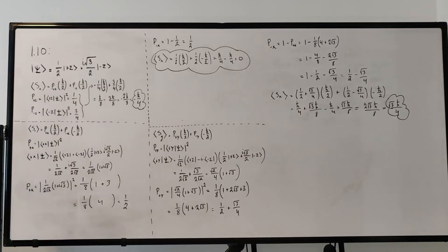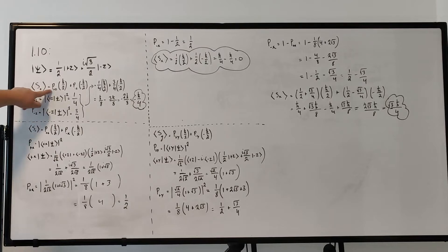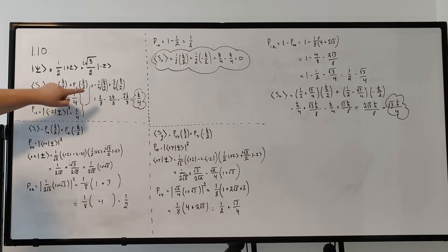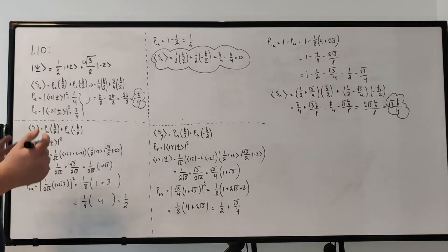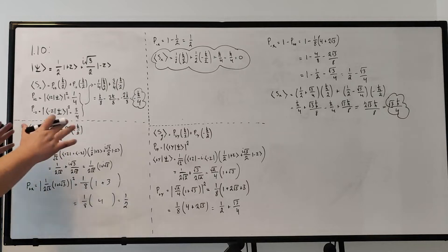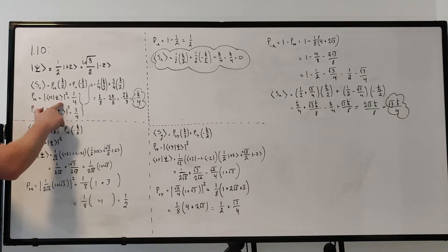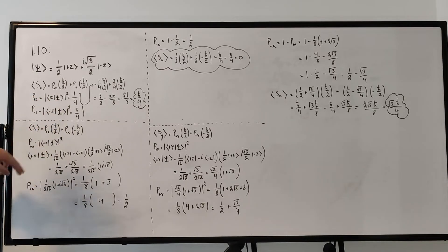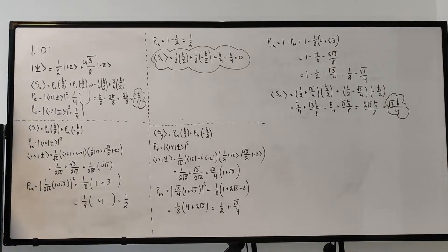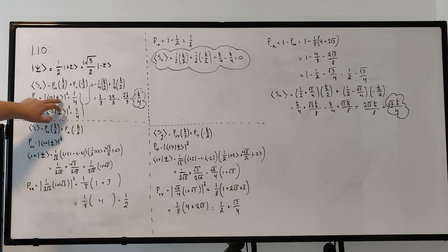Starting with the z component of spin, which is the easiest: the expectation value is the probability of +z times ℏ/2, plus the probability of −z times −ℏ/2. The probabilities are just the magnitude squared of the inner products. So for the probability of +z, we need |⟨+z|ψ⟩|², and for the probability of −z, we need |⟨−z|ψ⟩|². This inner product is essentially saying what is the probability amplitude to find the particle in that state.